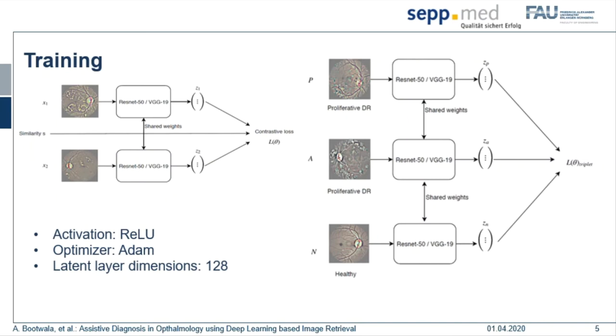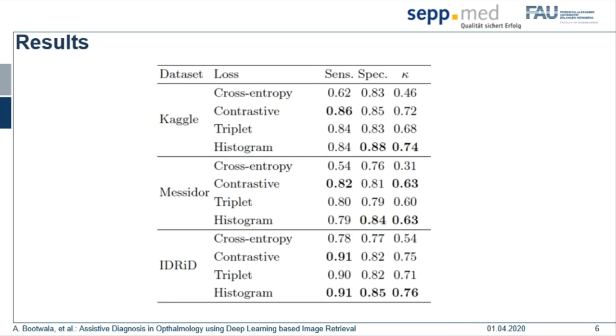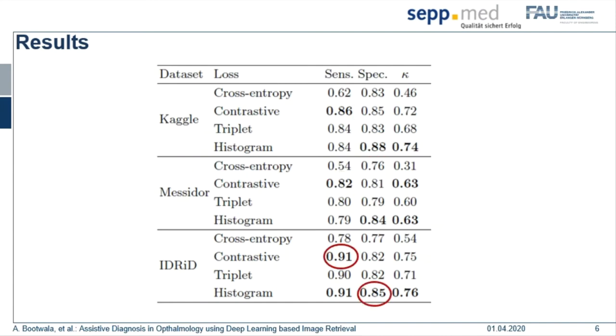If you observe, for all three datasets we get a higher sensitivity score with the contrastive loss and a higher specificity score with the histogram loss. However, triplet loss is not far behind.